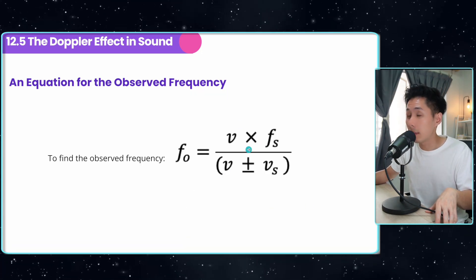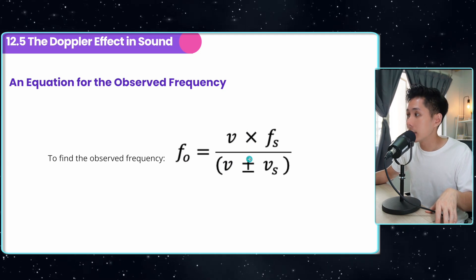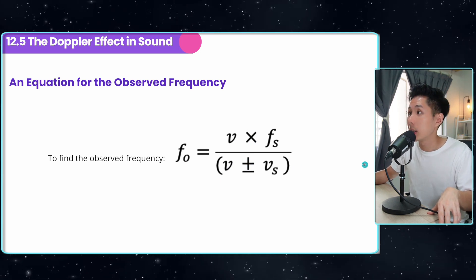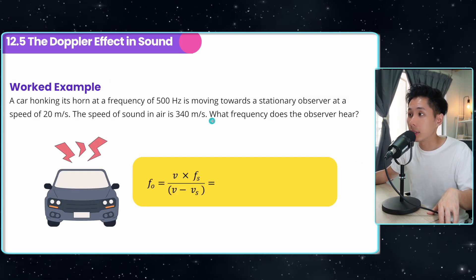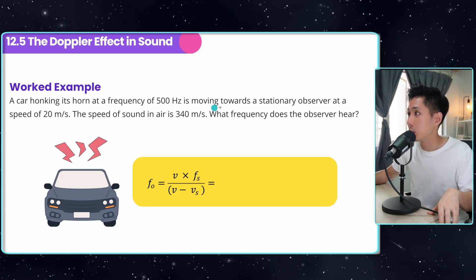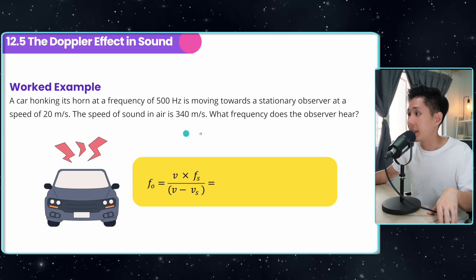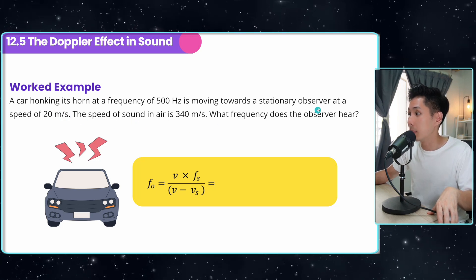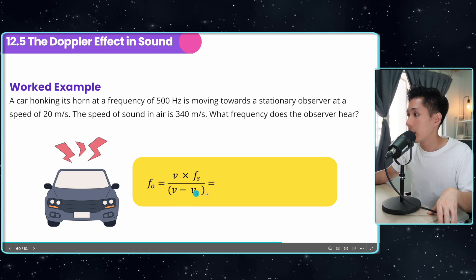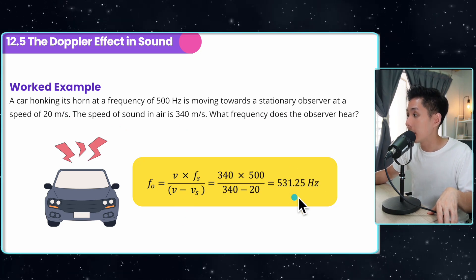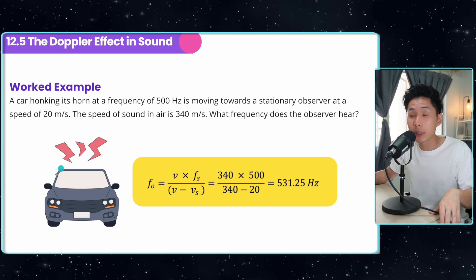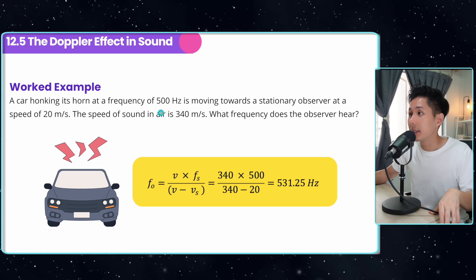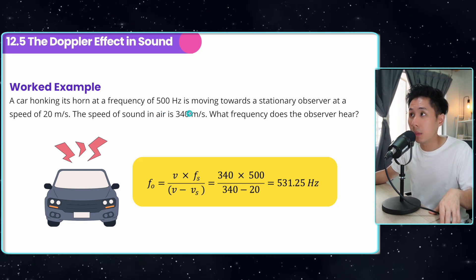In summary: depending on whether the sound source is moving away from or closer to the observer, we use plus or minus in the denominator. Let's solve an example: a car horn sounds at a frequency of 500 Hz and is moving towards a stationary observer at 20 m/s. The speed of sound is given. Because the car is moving towards the observer, we use the minus formula. Substituting everything in, we find the observed frequency is higher than the original 500 Hz — which is consistent with what we expect from the Doppler effect.